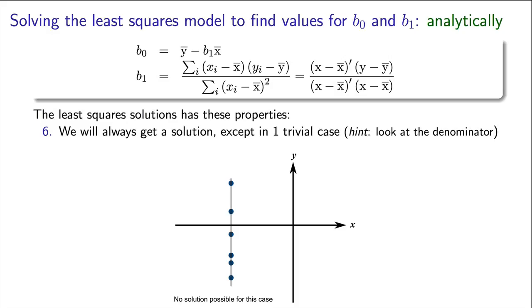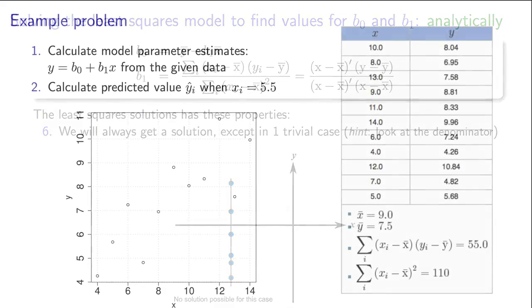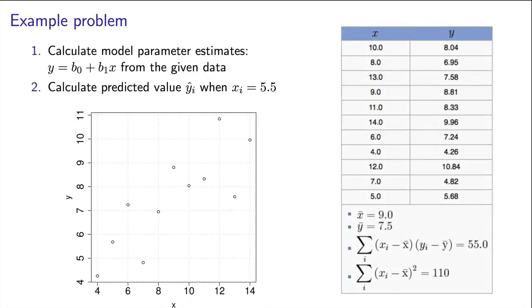As long as there's variability away from the mean, then you can always calculate b1. To end this video, let's go through a practice problem. Calculate the least squares estimates for b0 and b1 using the two formulas you've just learned. Here are some raw data, and I've calculated some summary numbers from them to help you out.